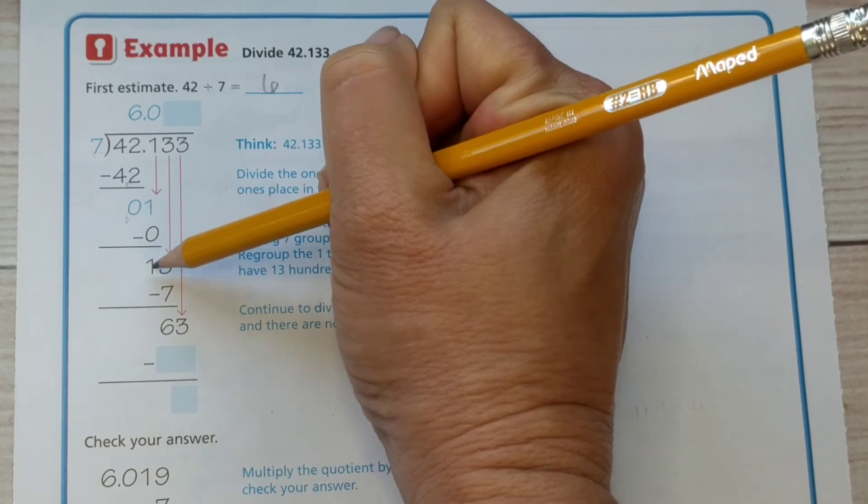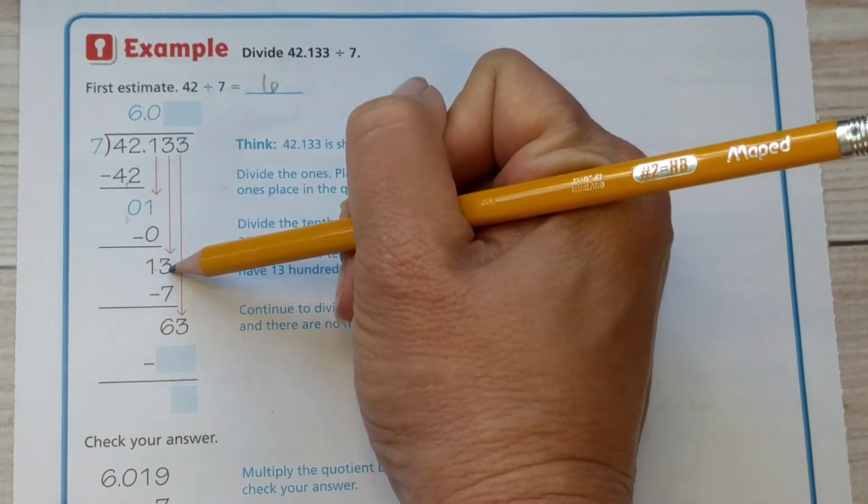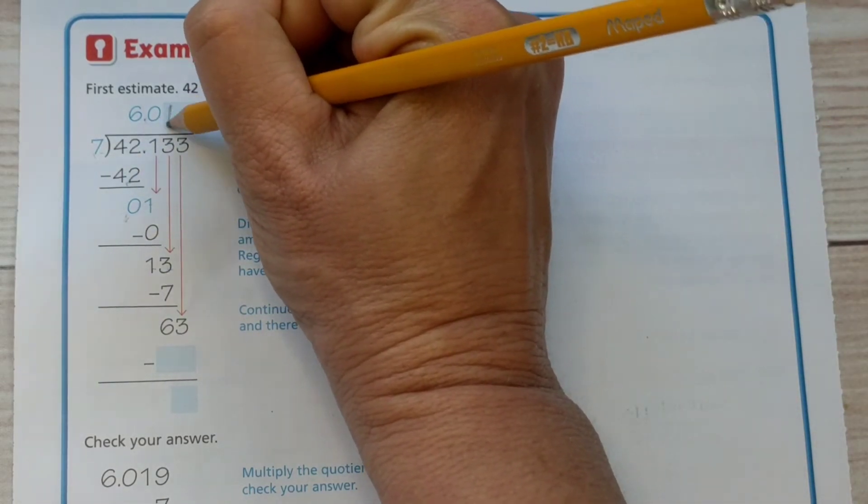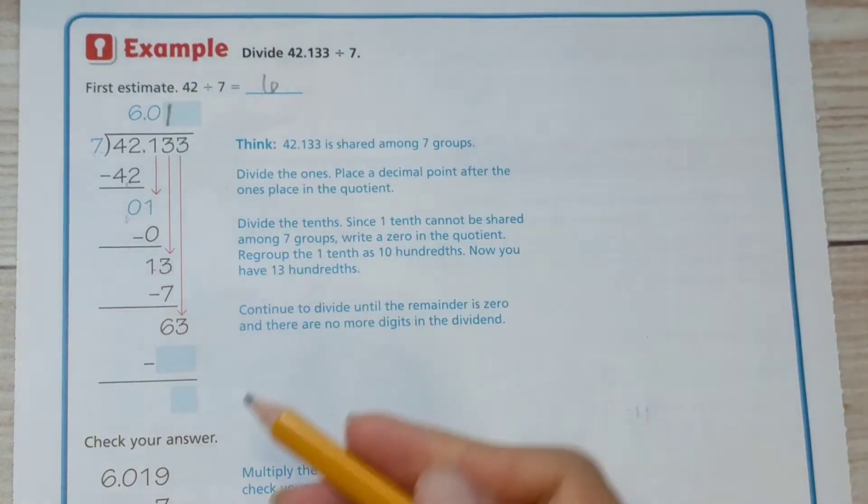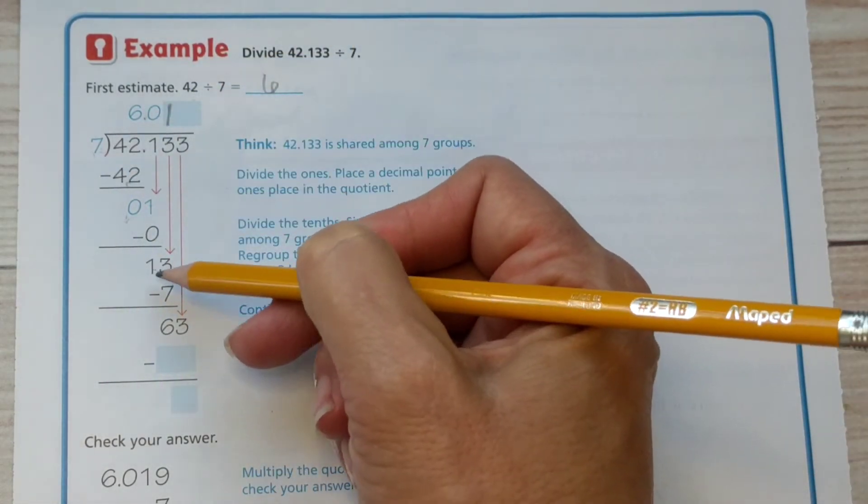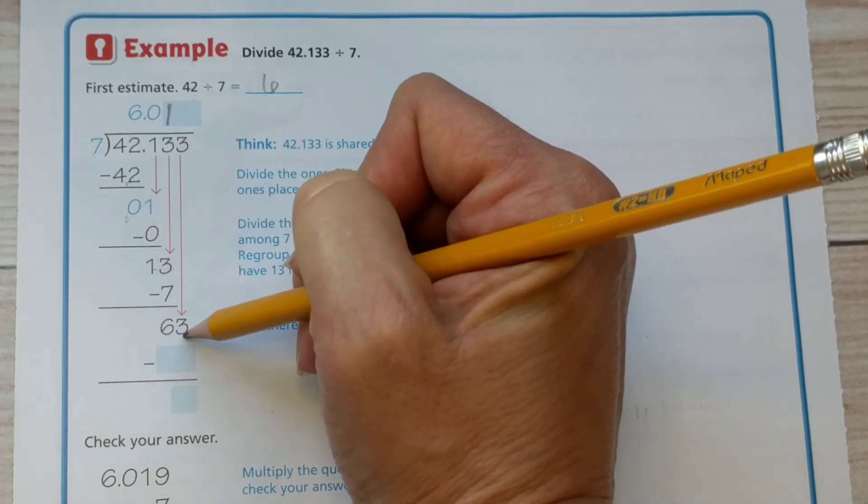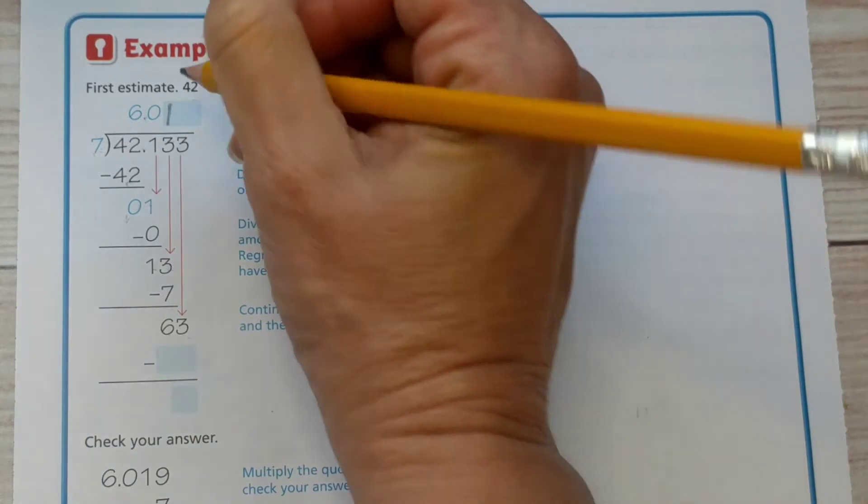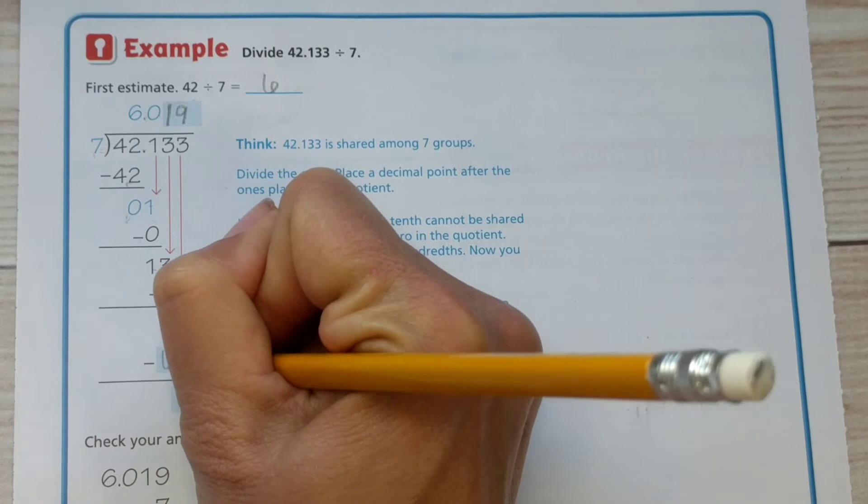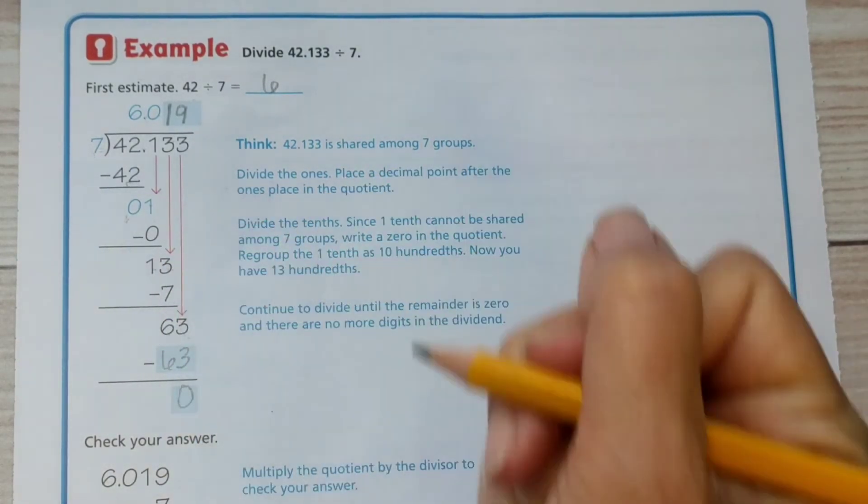So we subtract the zero, bring down the one again, bring down the three. Seven goes into thirteen one time. Make sure that one goes above the three. Seven times one is seven. Now I subtract thirteen take away seven is six. Bring down the three. Seven goes into sixty three nine times. Sixty three and sixty three take away sixty three is zero.